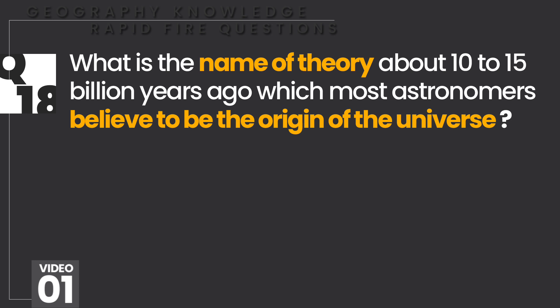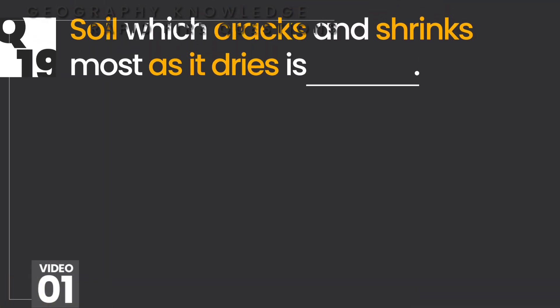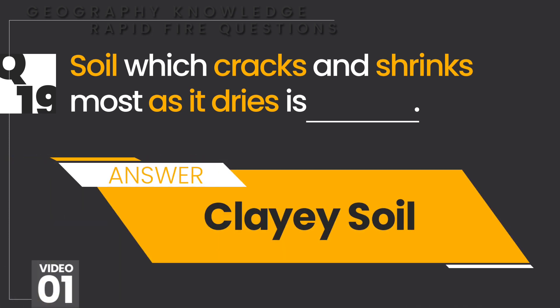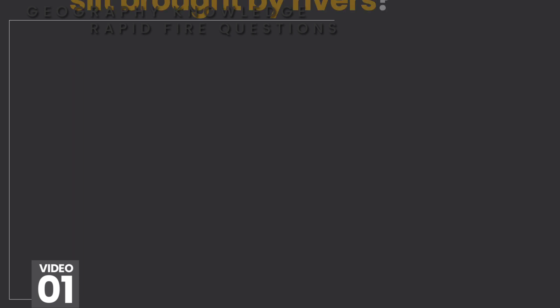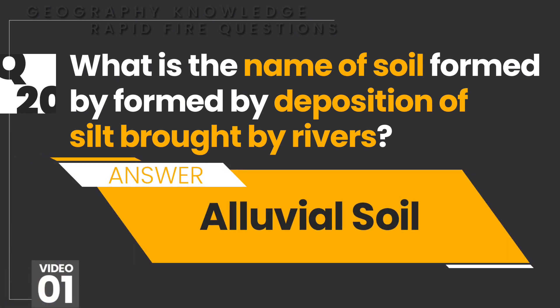What is the name of the theory about 10 to 15 billion years ago which most astronomers believe to be the origin of the universe? Big Bang Theory. Soil which cracks and shrinks most as it dries is clay soil. What is the name of soil formed by the deposition of silt brought by rivers? Alluvial soil.